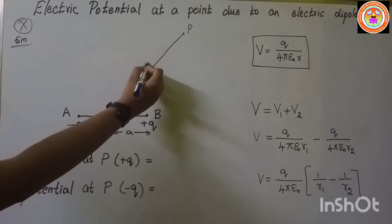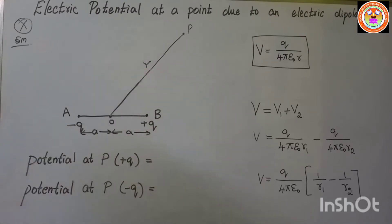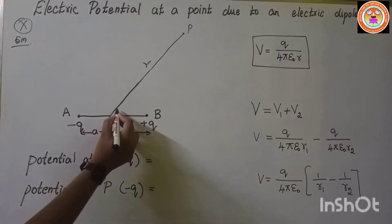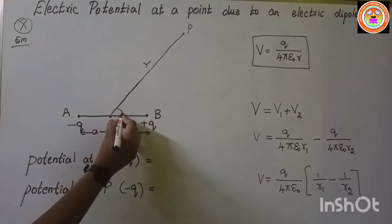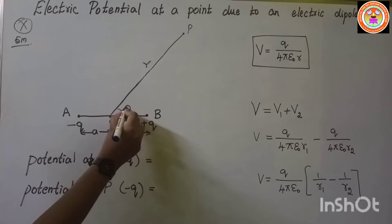The point P is at a distance r from the dipole. The point P with respect to the electric dipole makes an angle theta.